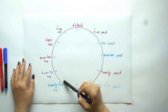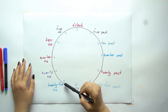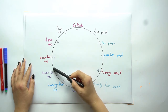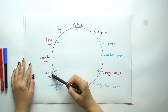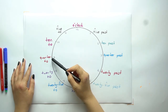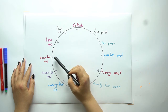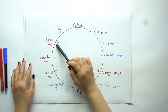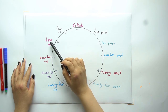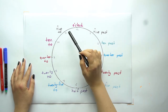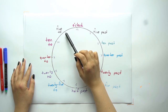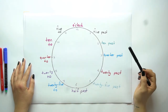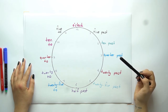When the long hand is on 7, it means 25 to. When the long hand is on 8, it means 20 to. When the long hand is on 9, it means quarter to. When the long hand is on 10, it means 10 to. Please remember that the long hand always shows the minutes.